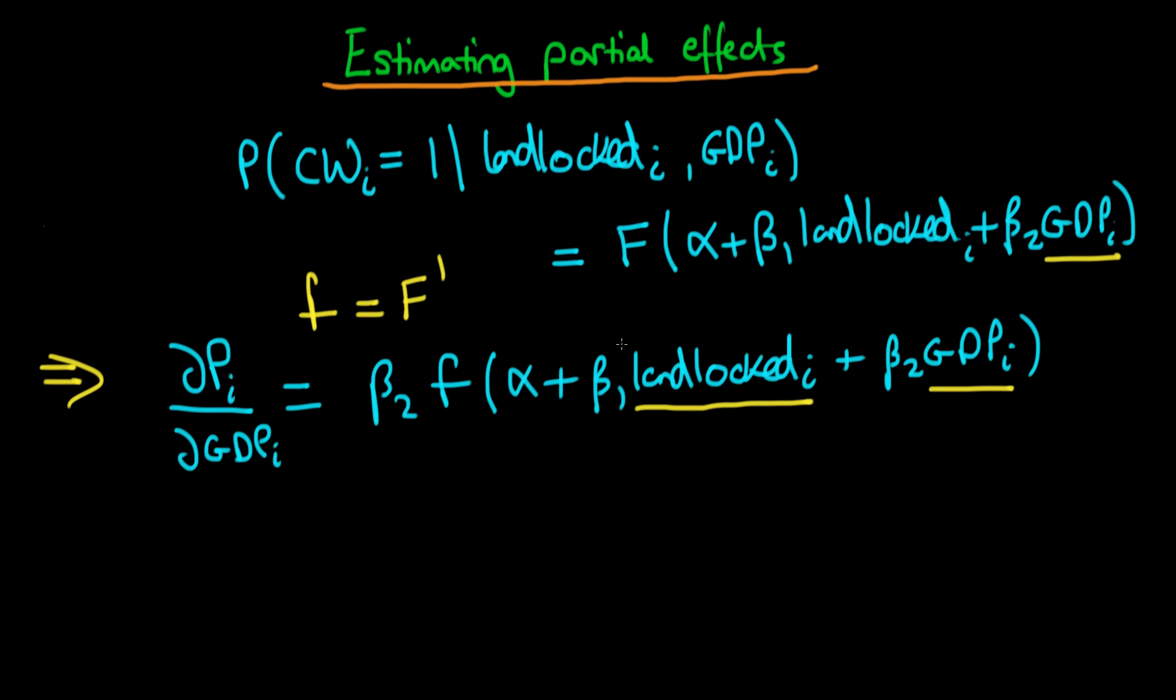Well, one solution is to take each of these variables at their average. And when you do that, essentially you're calculating the partial effect when all variables are at their averages.